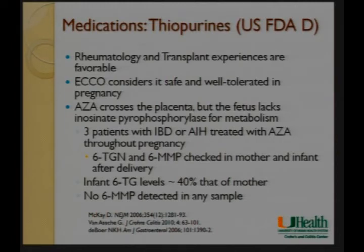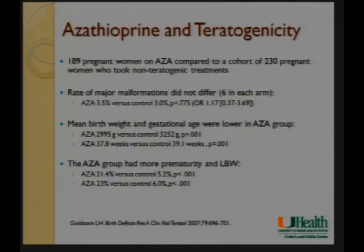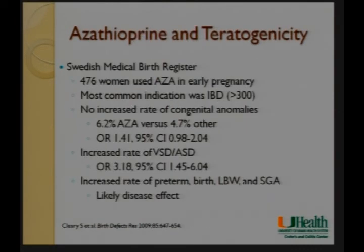In a small study of three patients with IBD or autoimmune hepatitis, the metabolites 6-TGN and 6-MMP were measured; 6-TGN levels were much lower and 6-MMP was undetectable in the fetus, suggesting the fetus can't effectively metabolize thiopurines and therefore the risk is probably not that high. Another study of 190 pregnant women on azathioprine compared to those not on it showed no difference in major malformations — 3.5% versus 3% — not significant. There was lower birth weight and earlier delivery, but most children had completely healthy development afterwards.